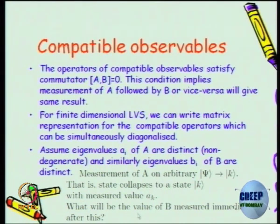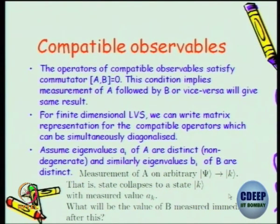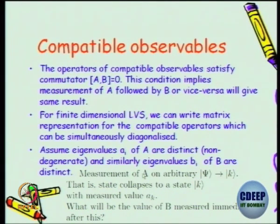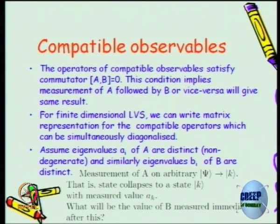Then if you do a B measurement immediately after this, what will the value be? It will be b_k. The system has collapsed to |k⟩, and we can say even before measuring B that it has to give b_k — because once it has collapsed to the eigenstate of A, it will remain in that eigenstate, which is simultaneously the eigenbasis for B operator as well, since A and B are compatible and commuting. That is why after measuring A you can precisely predict the value of the B measurement.